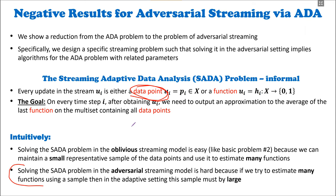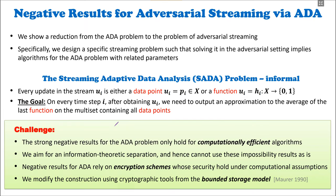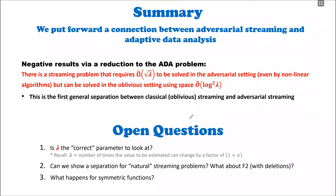The negative results for the ADA problem were computational, assuming one-way functions, but we aim for an information-theoretic separation. So we cannot directly apply those negative results — we need to open them up and modify them using cryptographic tools from the bounded storage model. To summarize: we establish a connection between adversarial streaming and adaptive data analysis, use this connection to present a streaming problem that separates the adversarial setting from the classical setting, and this is the first general separation between the capabilities of these two models.